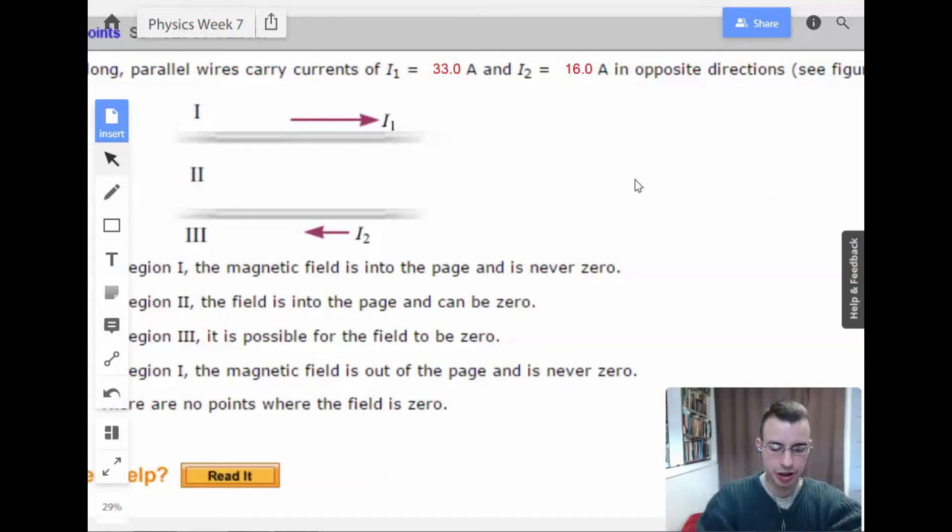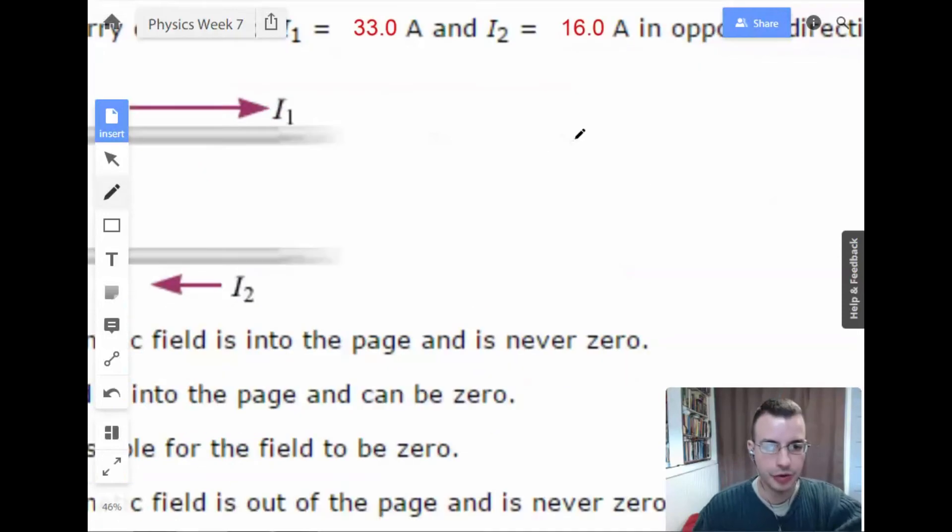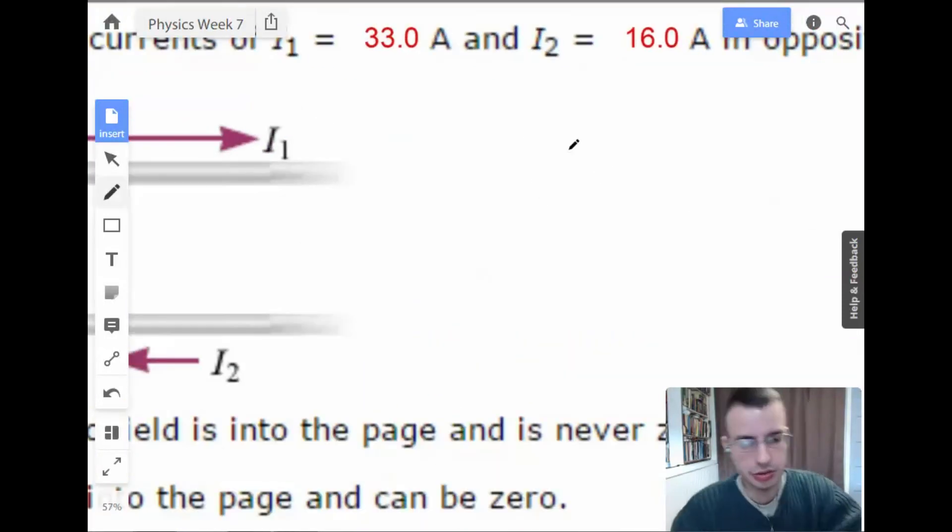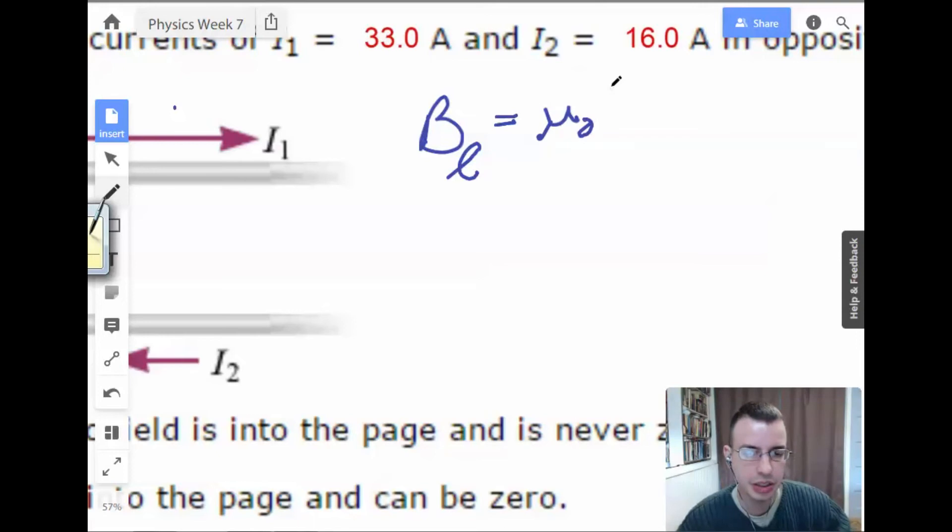So, start off by writing a formula for a magnetic field due to a current carrying wire. I'm going to call this B sub L, using this little L shape for line because it's kind of like a line, a line of wire.